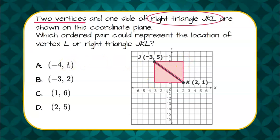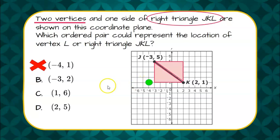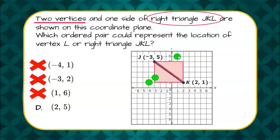So let's go and plot our points that are our choices. We have negative four, so left four up one. We can rule out that answer choice because it's not on our right triangle and would not form that vertex. Negative three up two would be this point — again, not on our vertex that we're looking for. Moving on, we have one, six — not going to be on the triangle we drew.